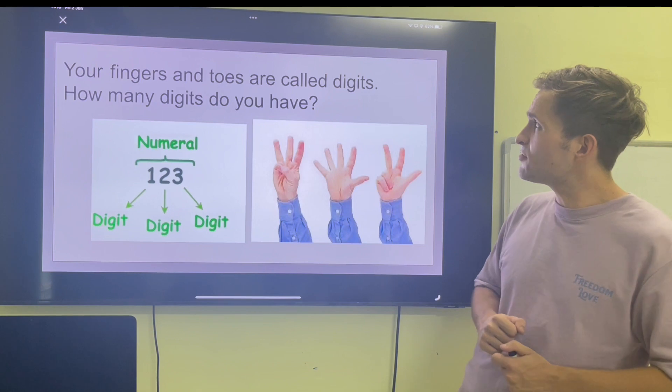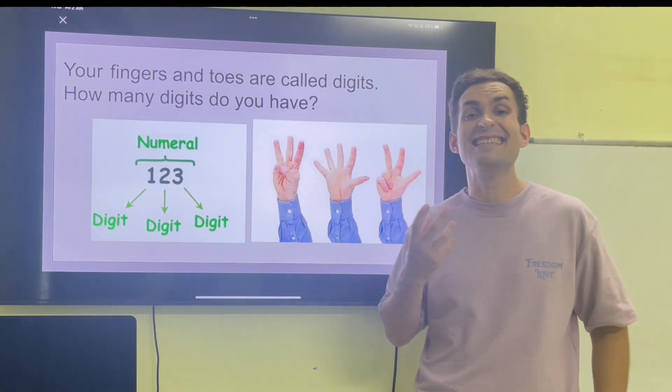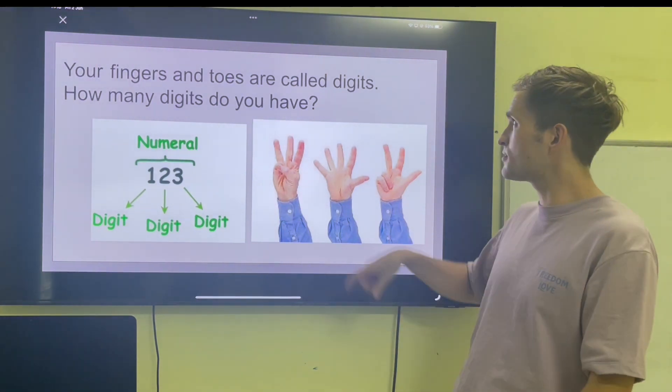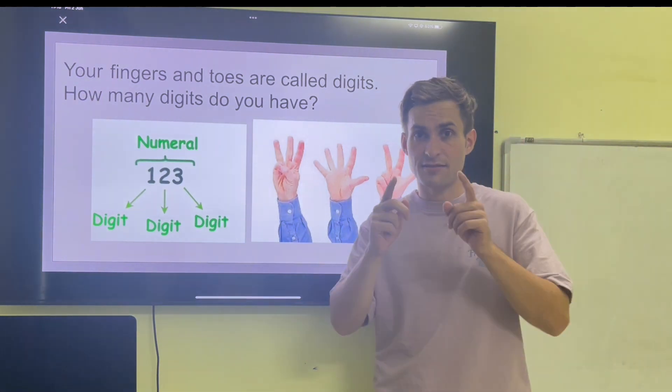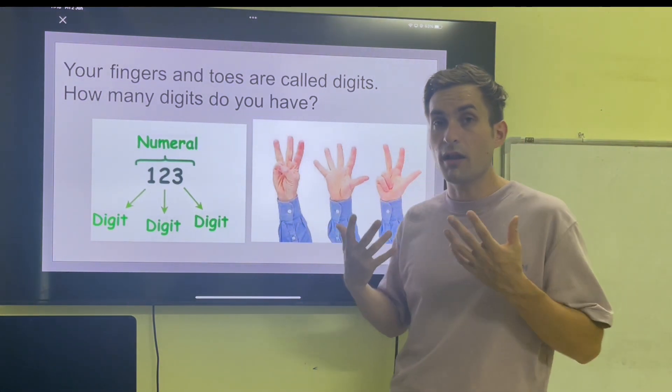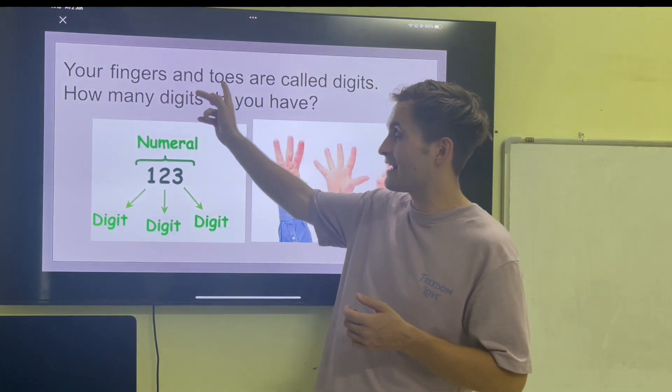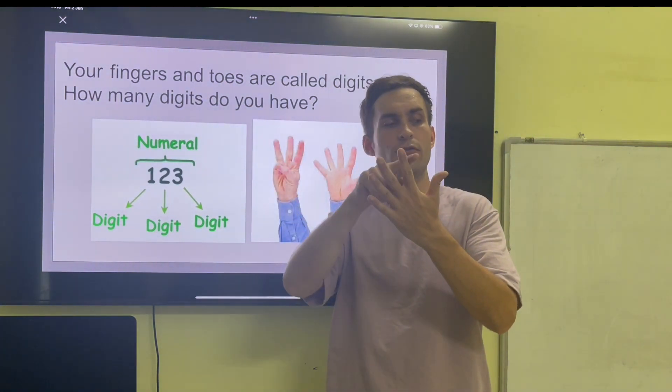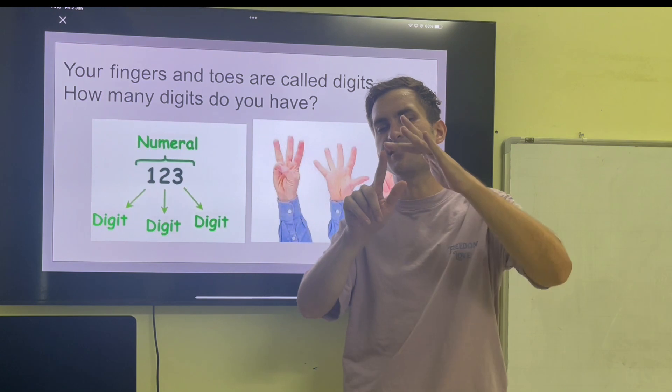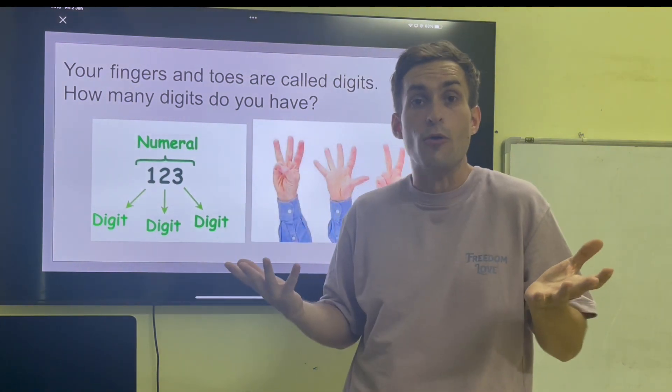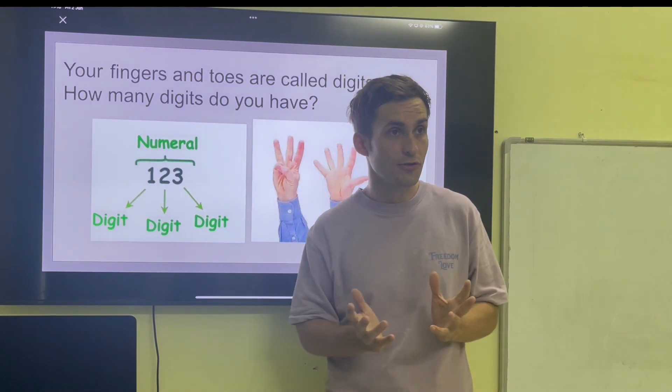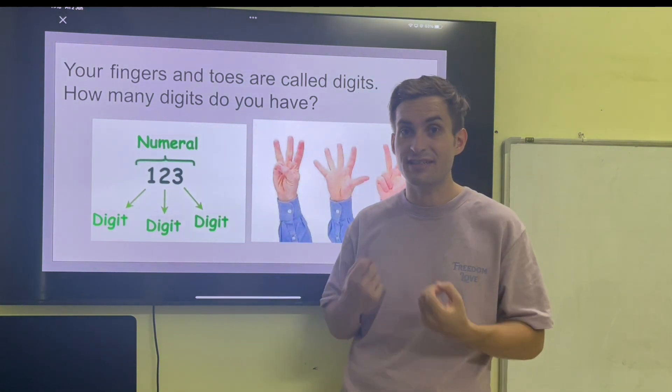Your fingers and your toes are called digits. How many digits do you have? Well, if we're counting our fingers and toes, I have one, two, three, four, five, six, seven, eight, nine, ten fingers and I have ten toes. So in total I have twenty digits.